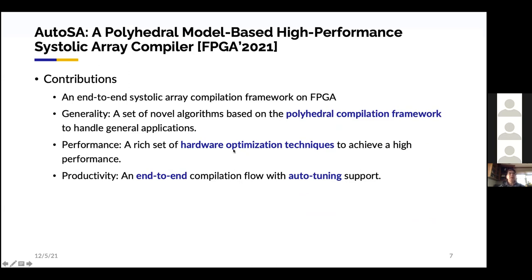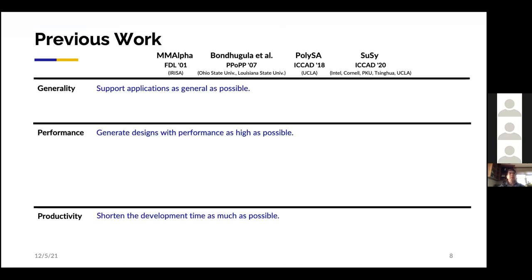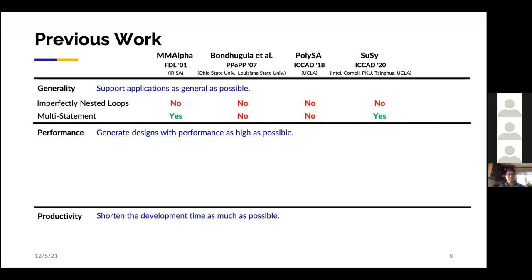At UCLA, we developed an end-to-end systolic array compilation framework. Previous work can be evaluated in three dimensions: generality (what applications it supports), performance (can it compare with manual designs?), and productivity (how fast can we get the best solution). The early work has significant limitations — some handle only perfectly nested loops, some cannot support multiple statements, and performance-wise, many lack array partitioning and other critical optimization techniques.